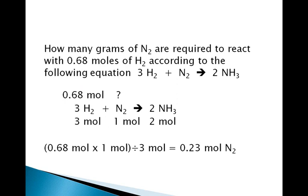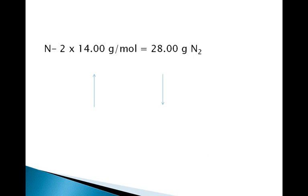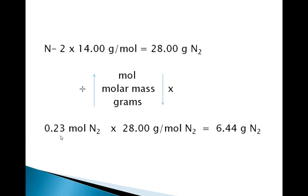We've got the number of moles of N2, but we want to know how many grams of N2. So we are going to ignore the equation and this calculation. All we need is the answer of 0.23 moles of N2 because we are going to convert it to grams. The first thing we need is the mass of one mole of N2. Since there are two N's in N2, each with a mass of 14.00 grams per mole, the molar mass of N2 is 28.00 grams per mole. We take 0.23 moles of N2 and multiply it times 28 grams per one mole of N2, and we end up with 6.44 grams of N2.